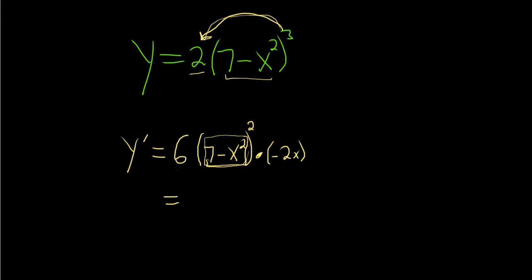The last step is to maybe multiply the 6 by the negative 2x. That'll give us negative 12x, parentheses, 7 minus x squared.